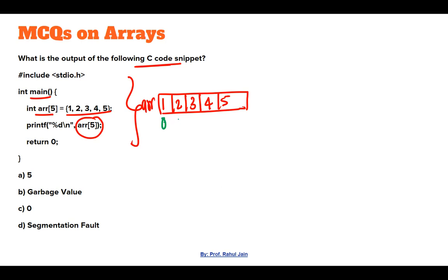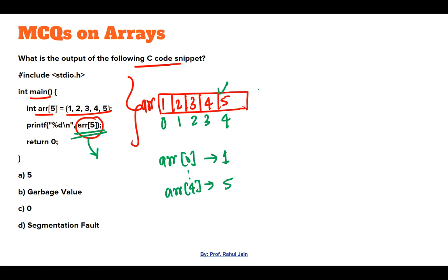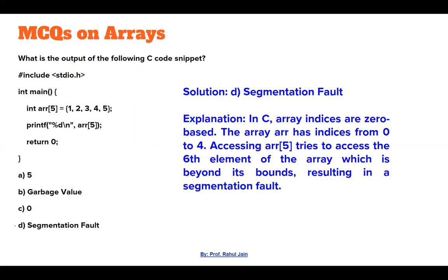Array indexing starts from 0 through 4. So array[0] prints 1, and array[4] prints 5. But accessing array[5] means we are touching a memory location that is not part of this allocation — we are exceeding the boundary line. This is array bounding violation, also called a segmentation fault. So option D is the correct answer.